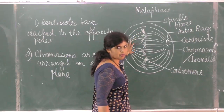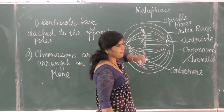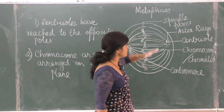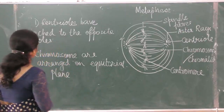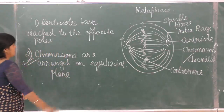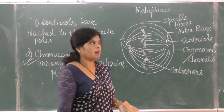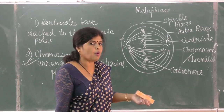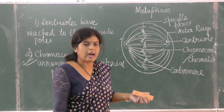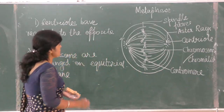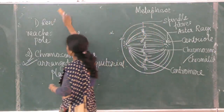Second, chromosomes are arranged on the equatorial plane. If they ask you to draw and label a cell undergoing metaphase — these are the reasons. Chromosomes arranged on the equatorial plane is a must. Centrioles located on opposite poles you will also find in anaphase, so make sure to mention the nuclear changes as this is part of karyokinesis.